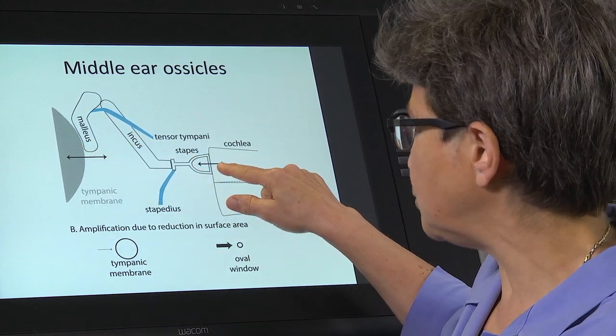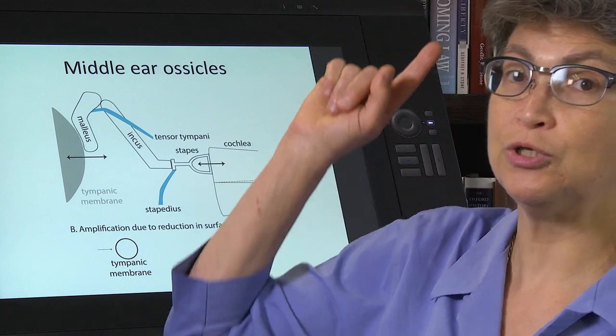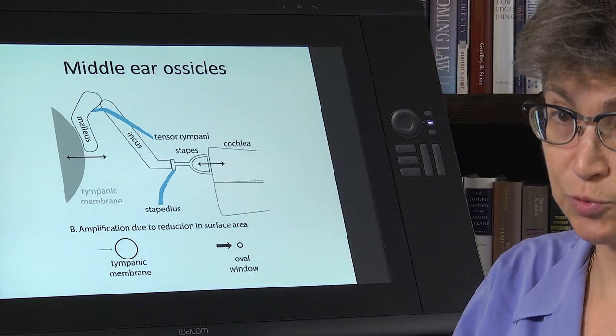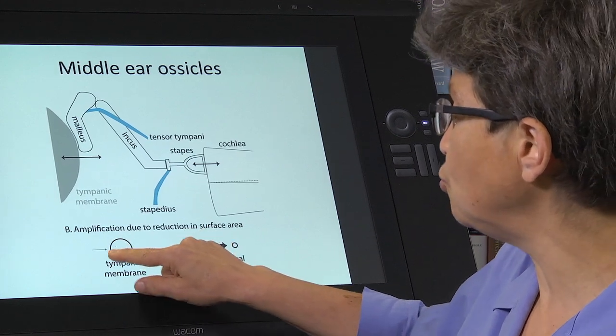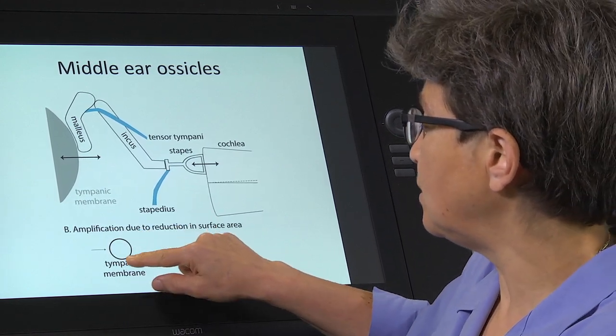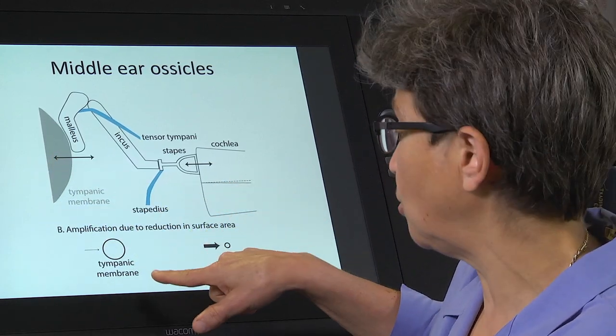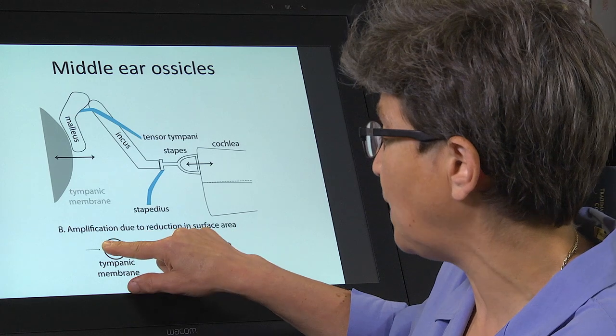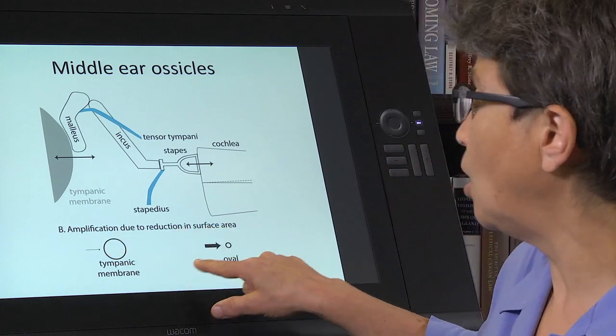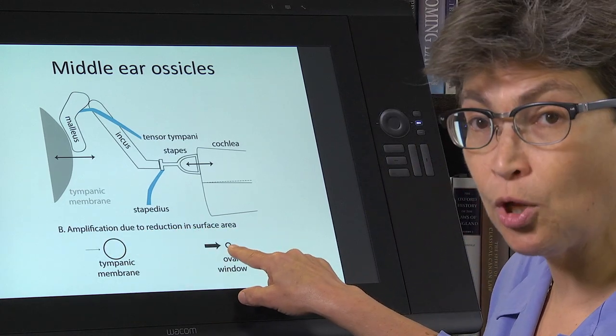We're going to lose energy in this transfer, but we don't lose as much as we would otherwise because there is a huge reduction in the amount of surface area that the pressure is operating on. So you're concentrating energy onto the tympanic membrane onto a much smaller surface, the oval window.